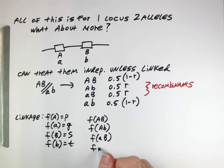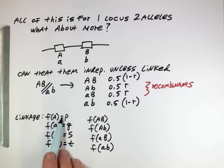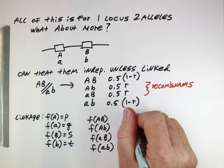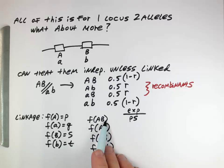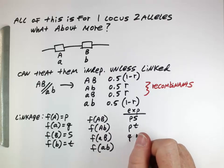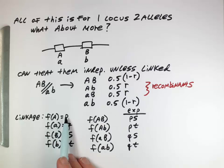What are the frequencies of these haplotypes we would expect to see produced by a population? Thinking about a panmictic population, the capital A, capital B haplotype we would expect to occur with proportion P times S. So in the population we'd expect a proportion P×S of those haplotypes, P×T of another, Q×S of another, and Q×T of the last. If there's free recombination and nothing is linked, we would expect to see exactly these frequencies.